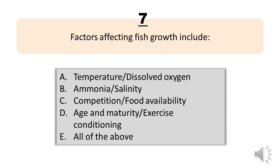Number 7. Factors affecting fish growth include: A. Temperature, dissolved oxygen. B. Ammonia, salinity. C. Competition, food availability. D. Age and maturity, exercise conditioning. E. All of the above. The correct answer is Letter E. All of the above.